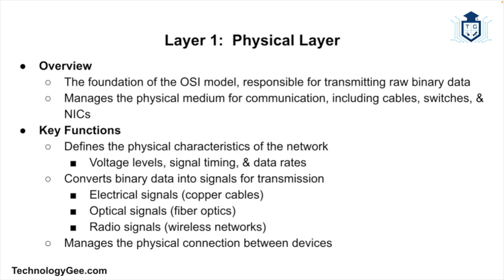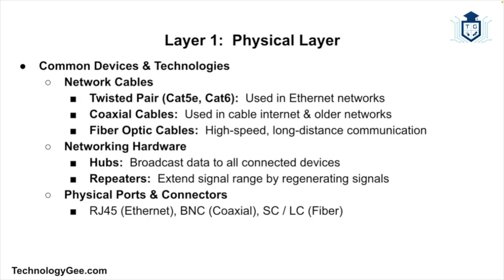The Physical layer converts binary data into signals — such as electrical, optical, or radio — for transmission, and handles the physical connection between devices. Common devices and technologies at this layer include Ethernet cables such as Cat5e, Cat6, and fiber optics, as well as hubs, repeaters, and physical ports and connectors. For the exam, be familiar with types of cables such as twisted pair, coaxial, and fiber optic, including their transmission speeds and distances.